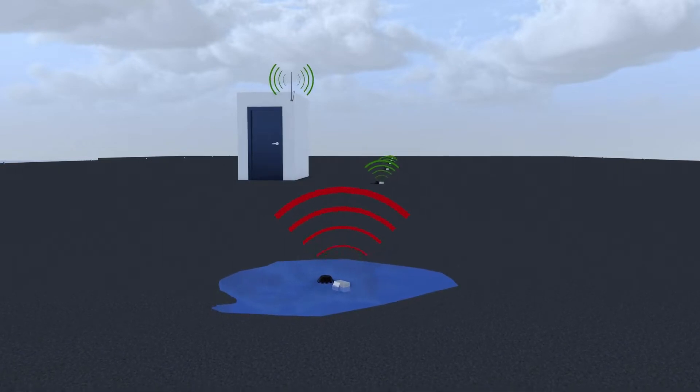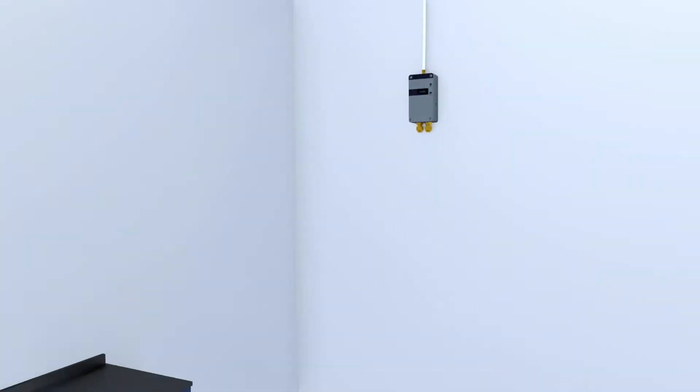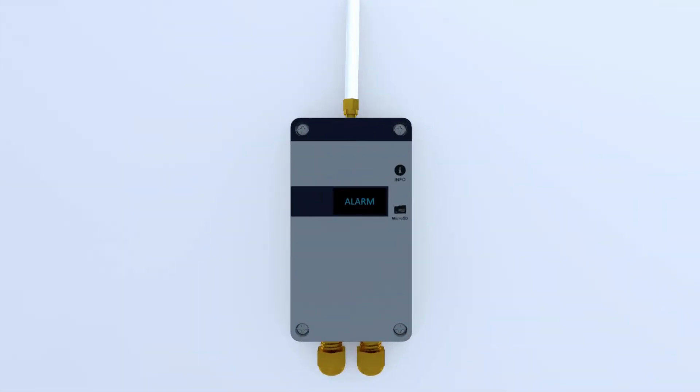The system compares the water level between drains on the roof. If the level becomes critical at one of the drains, you get a warning on the gateway.